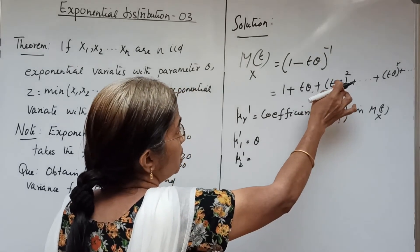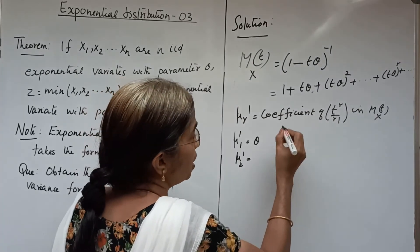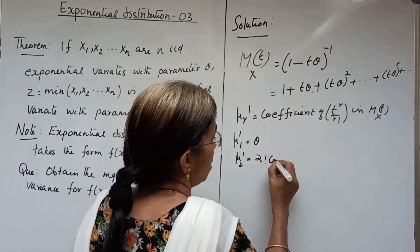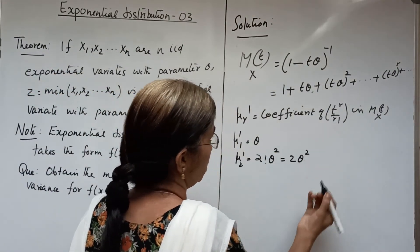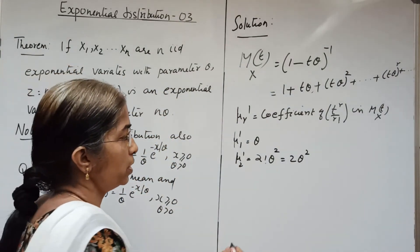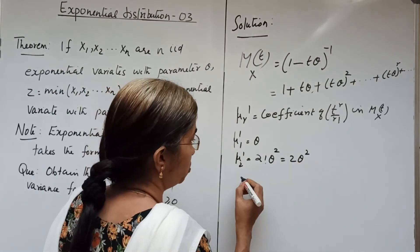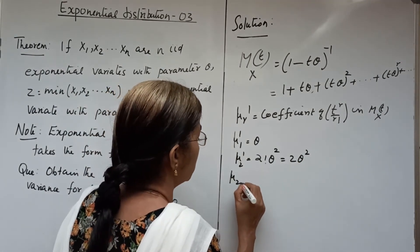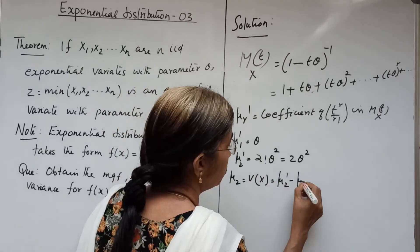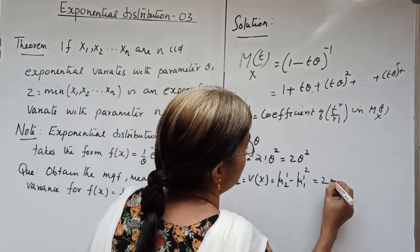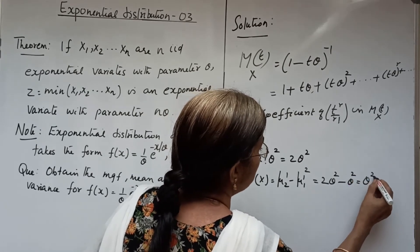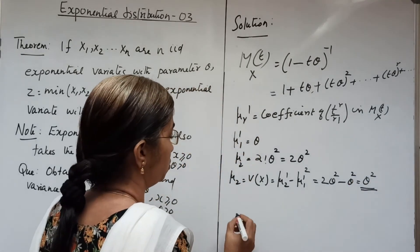The term is t theta whole squared, so we multiply the numerator by 2 factorial giving mu 2 dash equal to 2 theta squared. Therefore variance equals mu 2 equal to mu 2 dash minus mu 1 dash squared, that is 2 theta squared minus theta squared equal to theta squared. So variance equal to theta squared.